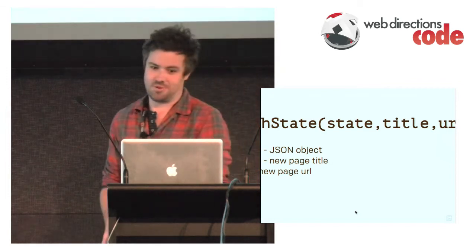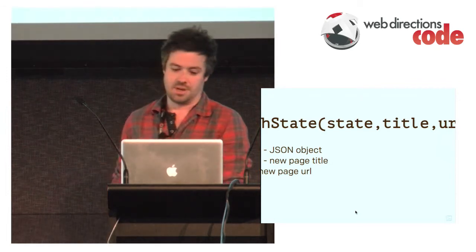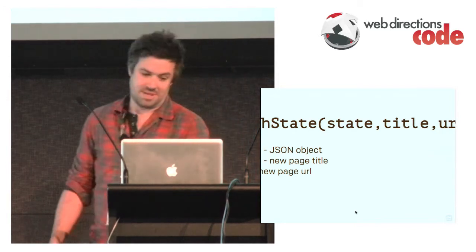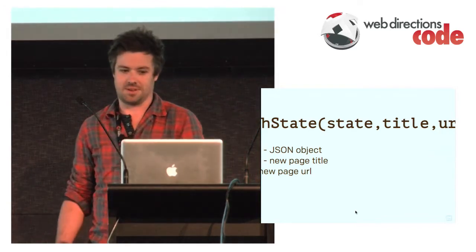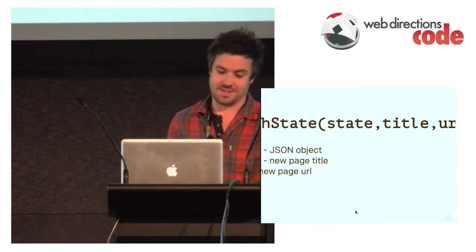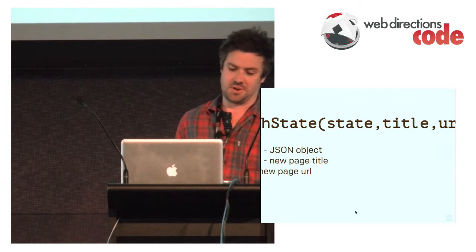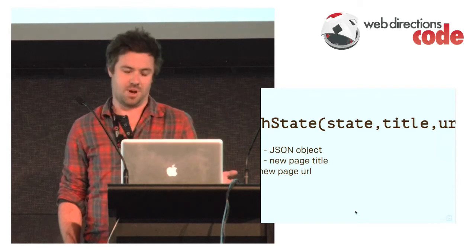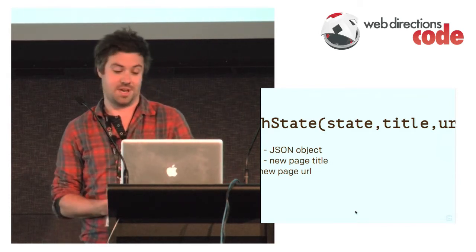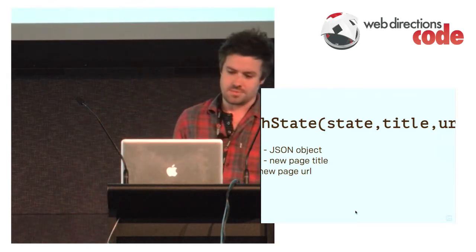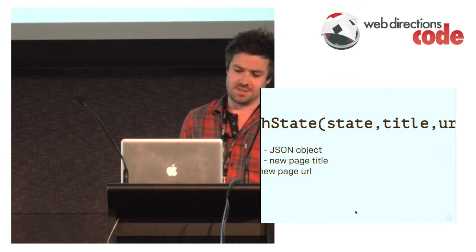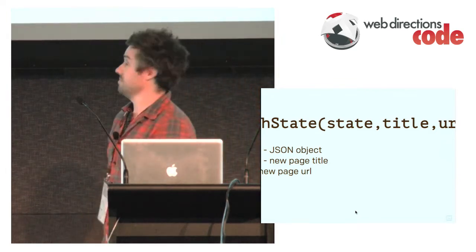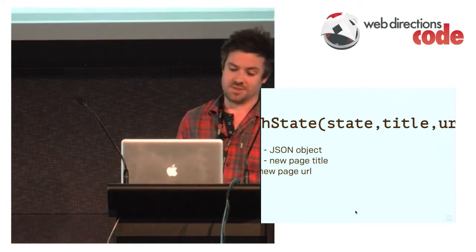The History API has actually been around for a very long time. You've probably used this command once or twice in the past — it goes back to about 1997, IE3, Netscape 2. So history.go(-1) says you want to go back one place in the stack of your page history. What HTML5 adds is a new command to the History API called push state, and this takes a few arguments.